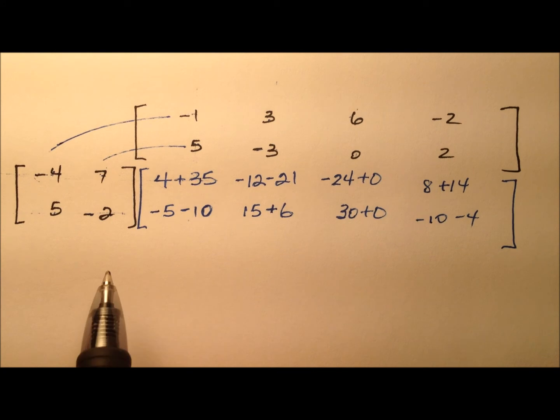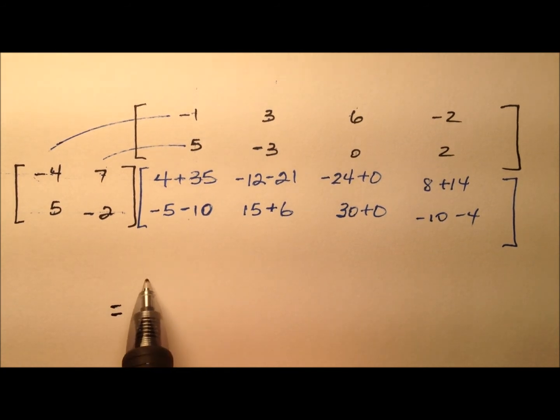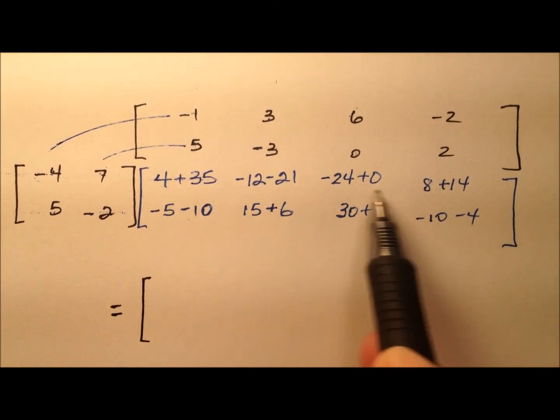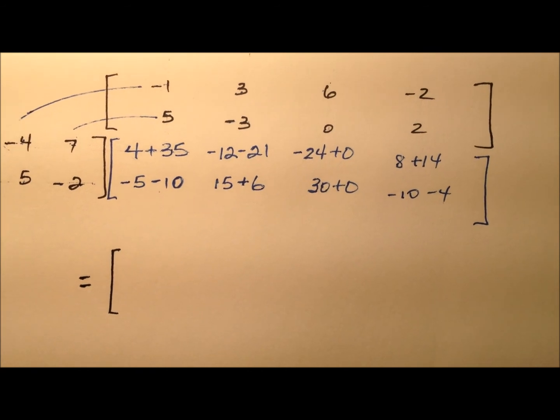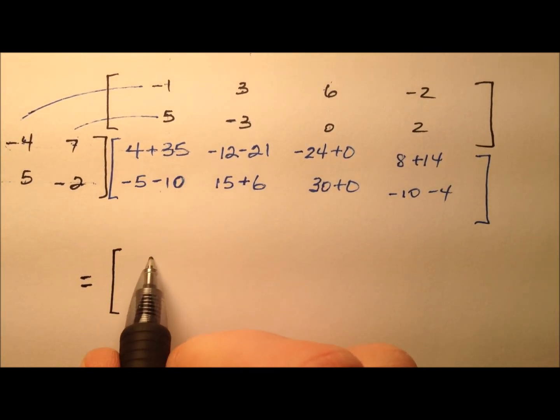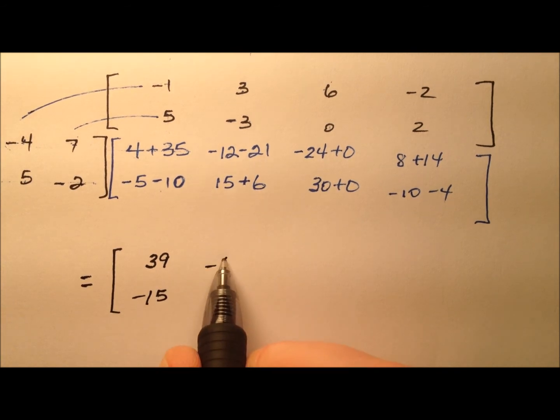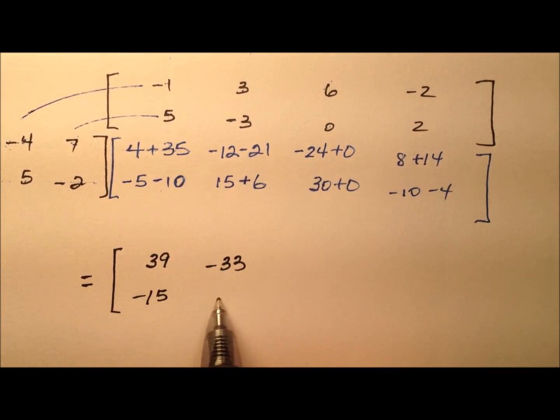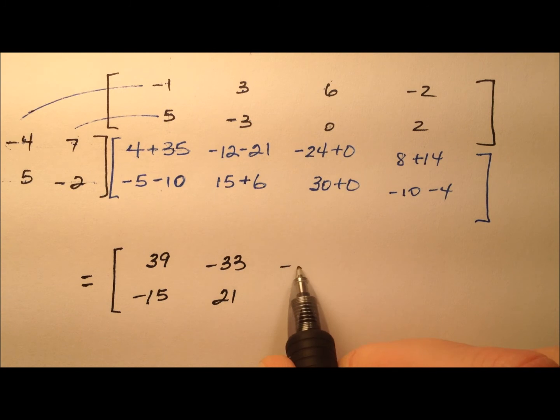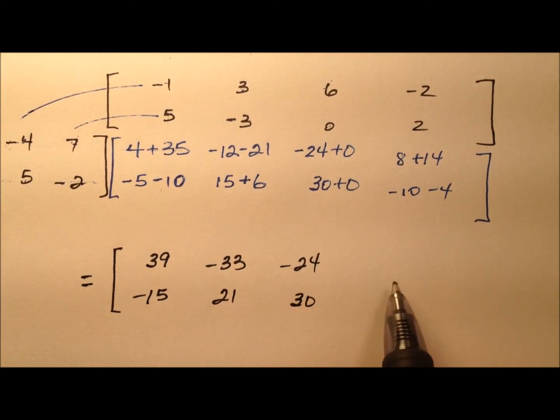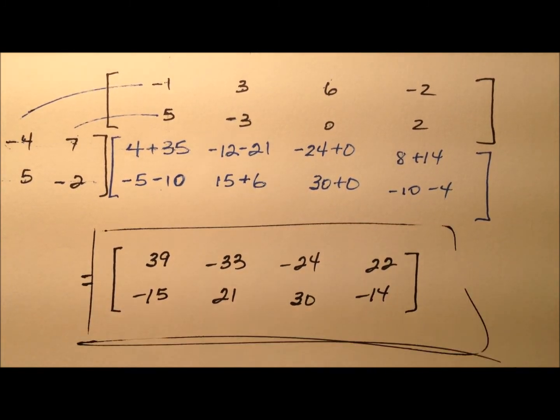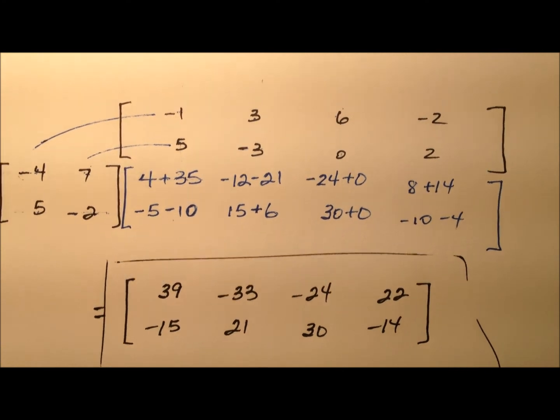So we can go ahead and finish up our product matrix here by doing this addition and subtraction. Okay, so this first one looks like 39, negative 15, negative 33, 21, negative 24, and 30, oh, 0's are easy, and then 22 and negative 14. So here, then, will be the product matrix.